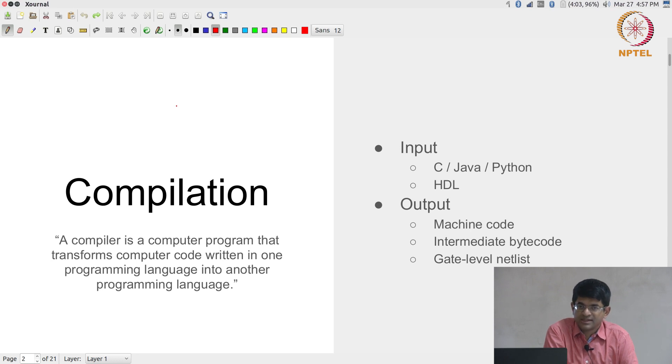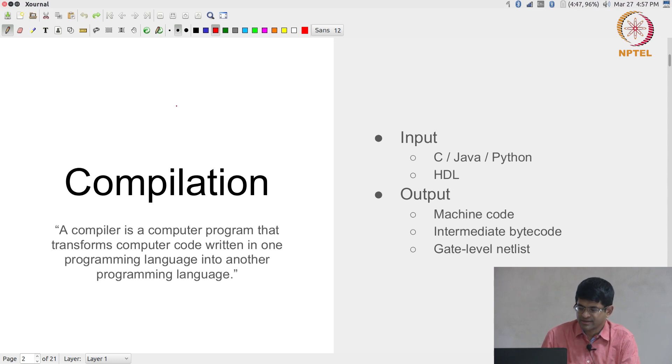The third kind of output could be a gate-level netlist, which is what we are finally interested in. What I am leaving unsaid over here is the fact that you could also have something which takes input in C and outputs Java - that is also a compiler, but those are rare and not really very useful in most cases.